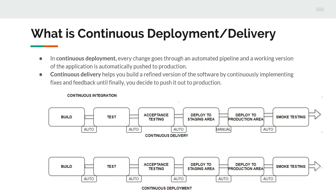In continuous deployment, every change goes through an automated pipeline and a working version of the application is automatically pushed to production. The below diagram is for continuous deployment and the above one is for continuous delivery. The first two steps — build and test — are the same as in continuous integration: when the developer makes a change, the code goes through the build activity, then unit and integration tests are performed.